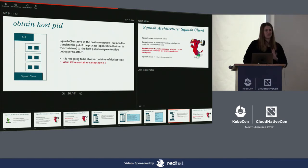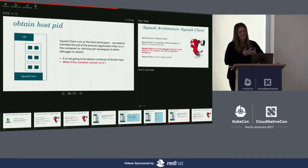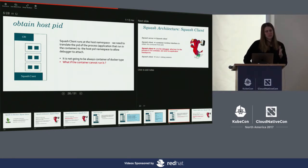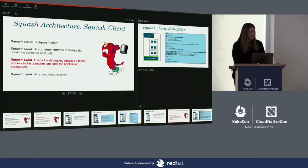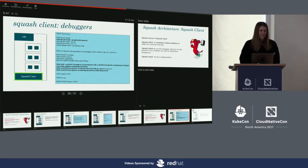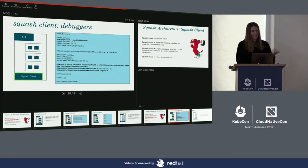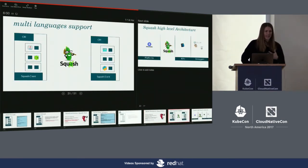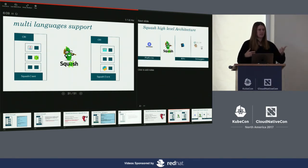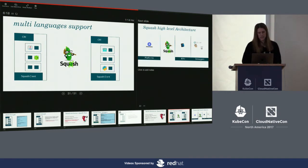There is one current limitation: if your container is not running 'ls', we have an issue — though you can work around that by injecting ls. We'd love your feedback on that. The Squash client's Dockerfile shows we install GDB and DLV, then initiate the debug server and attach it. The beauty is you can have one microservice in Go and another in Java, and attach the Java debugger to one and the Go debugger to the other — and actually debug across languages.